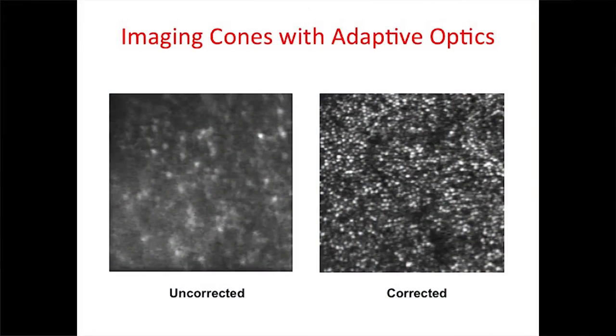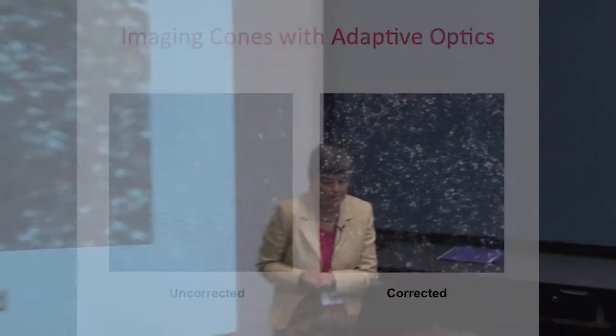On the left you see a retina from one of my former students with uncorrected optics, and on the right the same student once the optics were corrected. These individual white spots are cones — they are the individual cells which give you the colors that you see. There's no fluorescence here, no contrast agent; they're all lighting up because they're waveguides.